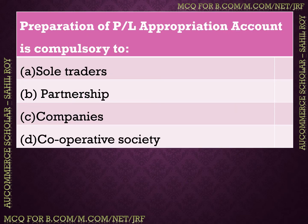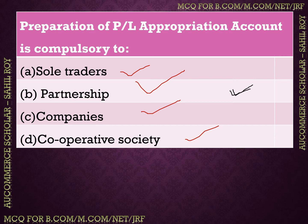The next question: Preparation of profit and loss appropriation account is compulsory for which form of business? Options: sole traders, partnership, companies, or cooperative society. In partnership, the profit and loss appropriation account is compulsory — it distributes the net profit or loss among partners. The answer is option B: partnership.